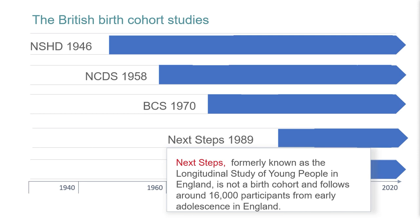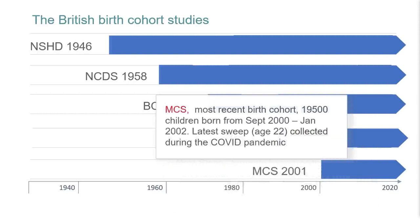Next Steps, previously known as the Longitudinal Study of Young People in England, follows the lives of around 16,000 people born in England between 1989 and 1990. Unlike the other studies, Next Steps did not commence at birth — rather it began in 2004 when the cohort members were aged 14. Next Steps has particularly rich data on education; for example, it can be linked to the National Pupil Database records. The Millennium Cohort Study, known as the Child of the New Century to cohort members and their families, is following the lives of around 19,000 young people born across England, Scotland, Wales and Northern Ireland between 2000 and 2002. The most recent sweep of data occurred during the COVID pandemic to study how individuals coped during that unprecedented situation.